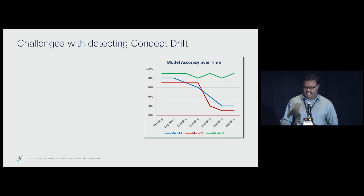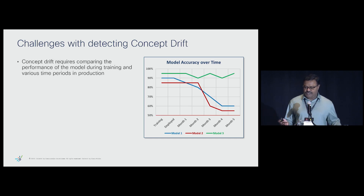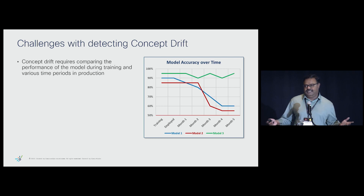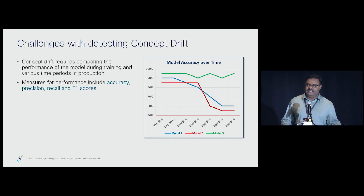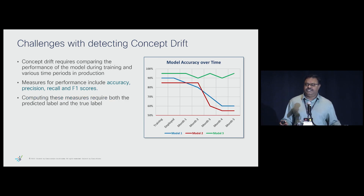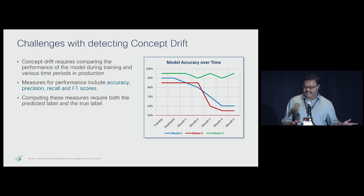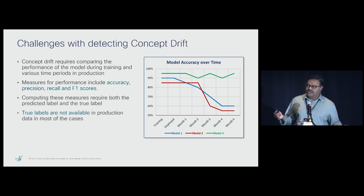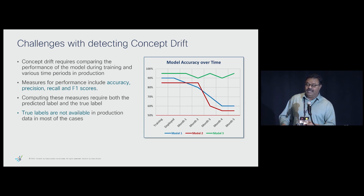What are the challenges with detecting concept drift? Concept drift requires that you take the performance of the model over time — including how it performed in training and how it is performing in production — and compare them to see if performance is staying up or changing. Typical drift performance measures are accuracy, precision, recall, and F1 scores. To compute any of these metrics, you need both the predicted label and the true label in production. True labels are not typically available in production — I know what the prediction is, but I don't know what the value is supposed to be.